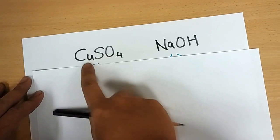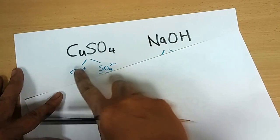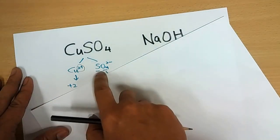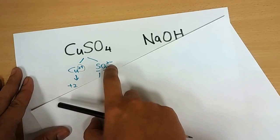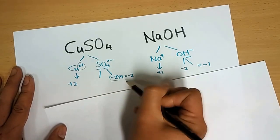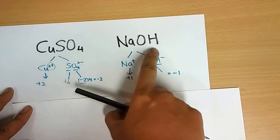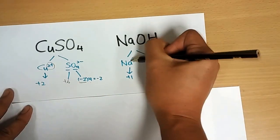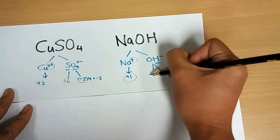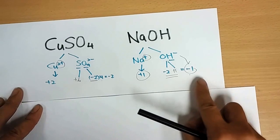For copper sulfate, to find the oxidation state of copper simply break it up into the ions straight away. When you have the charge you can find the oxidation state. Copper is plus two. For sulfur, break up into sulfate ions — sulfate is minus two, with four oxygens each at minus two, so sulfur must be plus six. For sodium hydroxide, break it up into Na⁺ and OH⁻. Sodium is plus one; in hydroxide, oxygen is minus two so hydrogen must be plus one so that the overall charge of hydroxide is minus one.